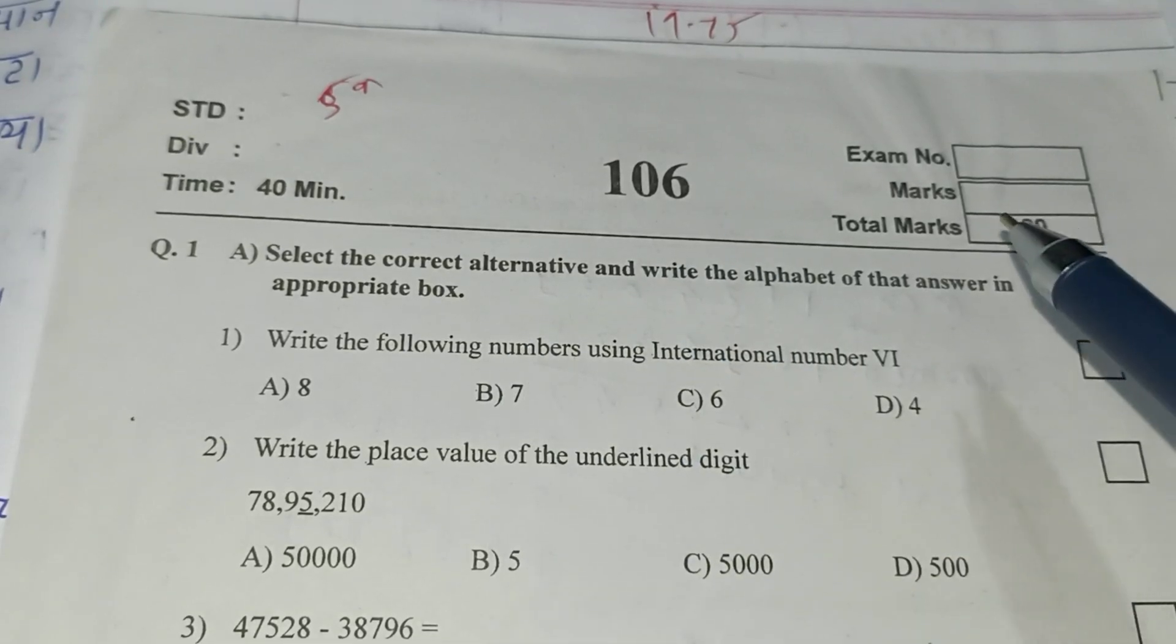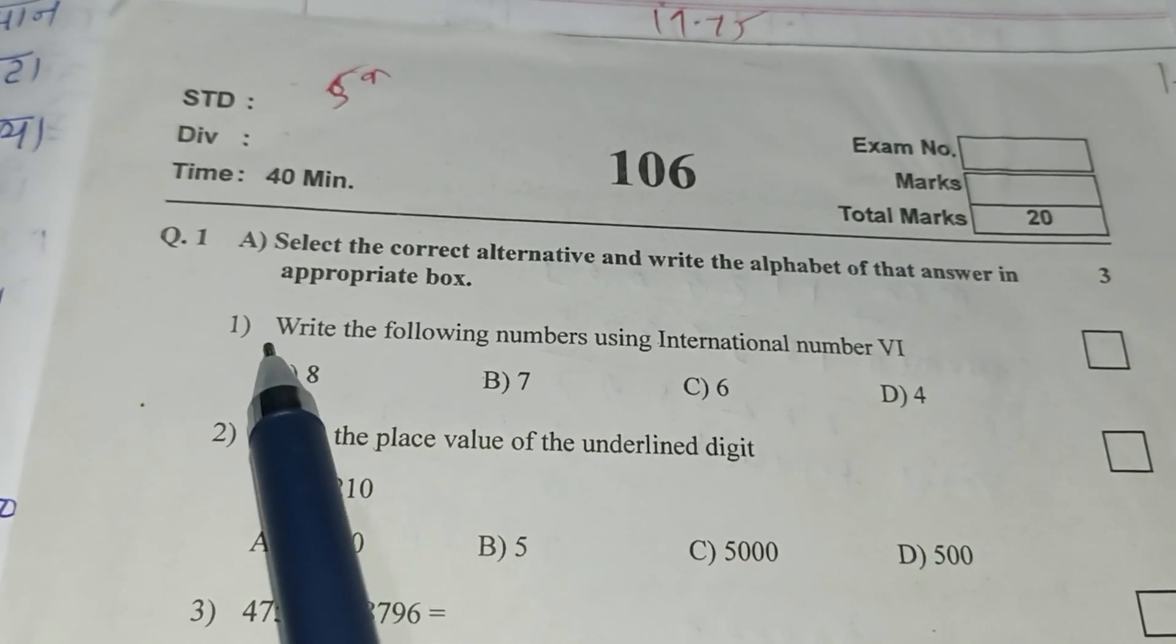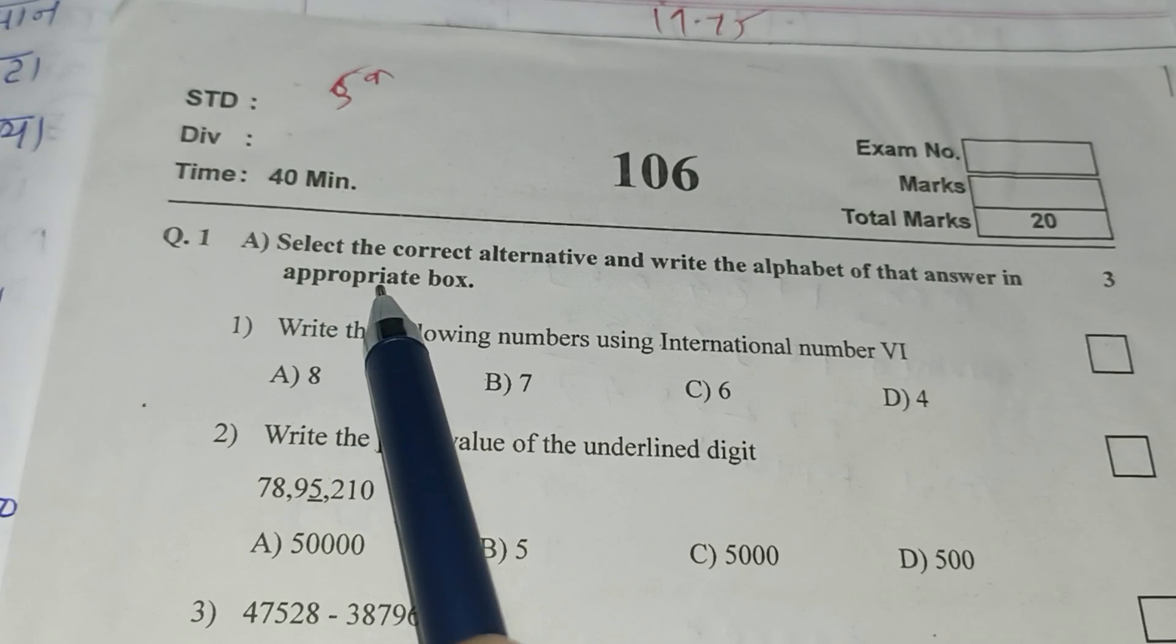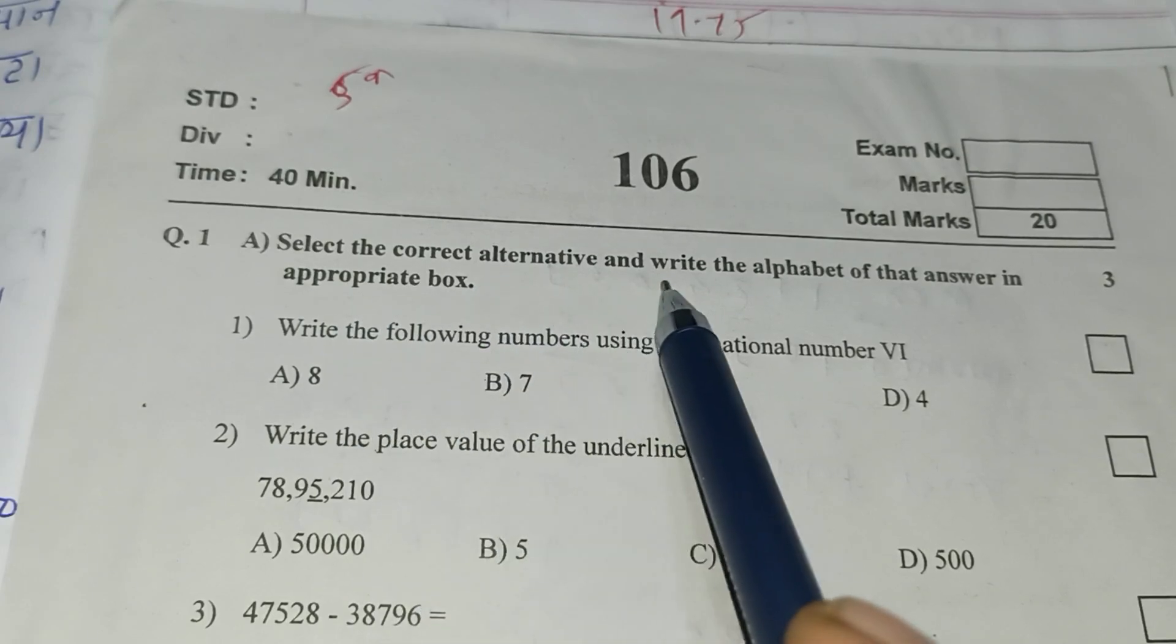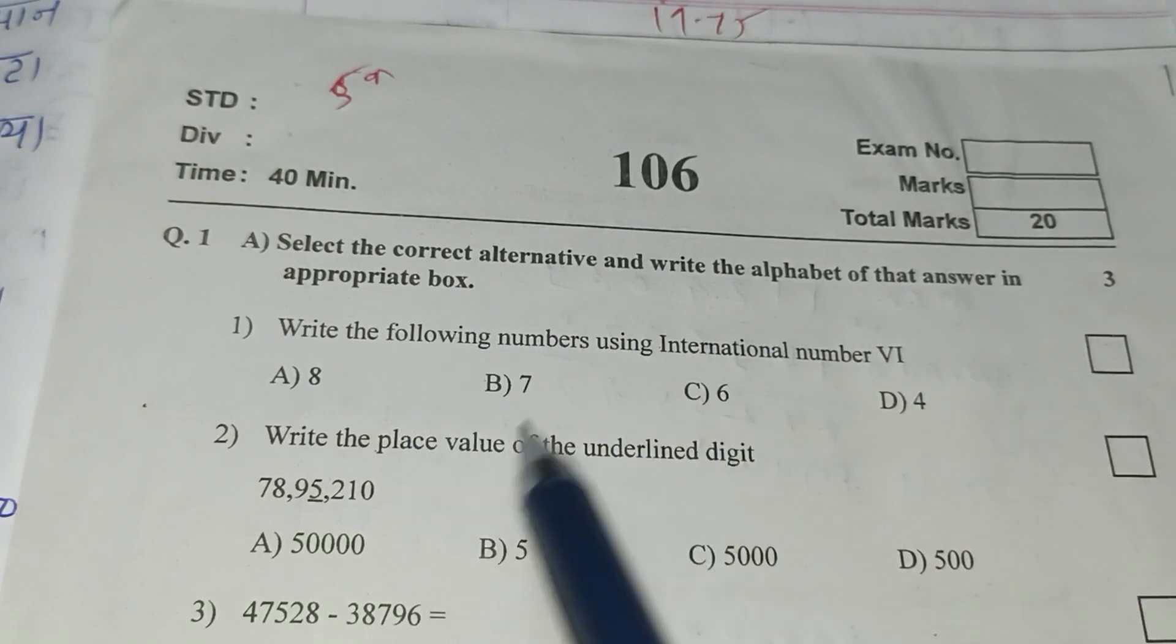Sample question paper for fifth standard for unit test number first, question number first A. Select the correct alternative and write the alphabet of that answer in appropriate box.